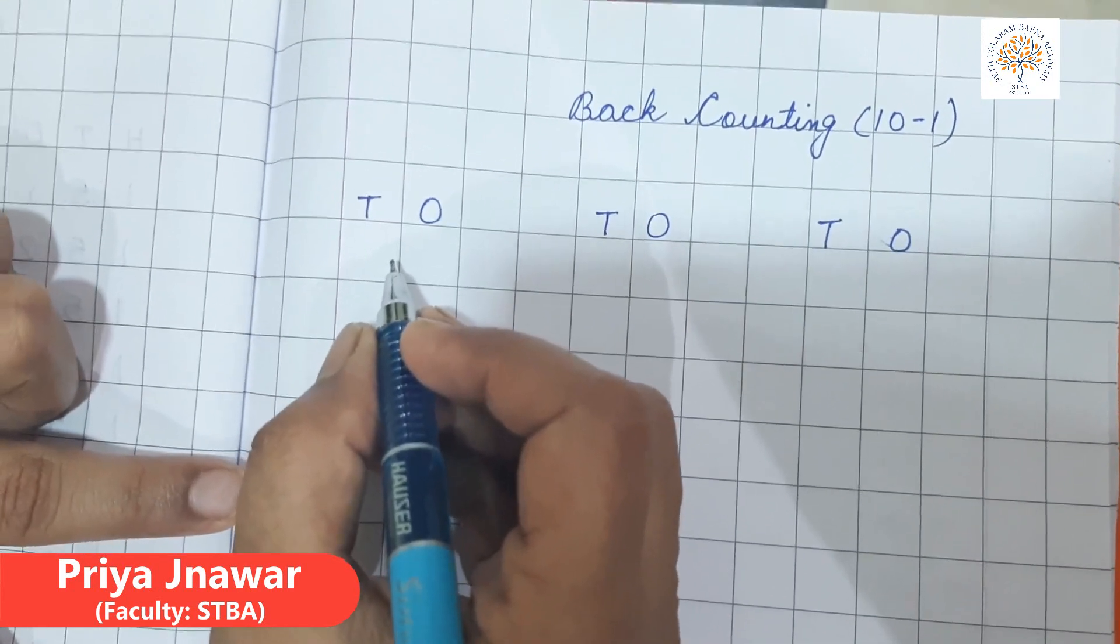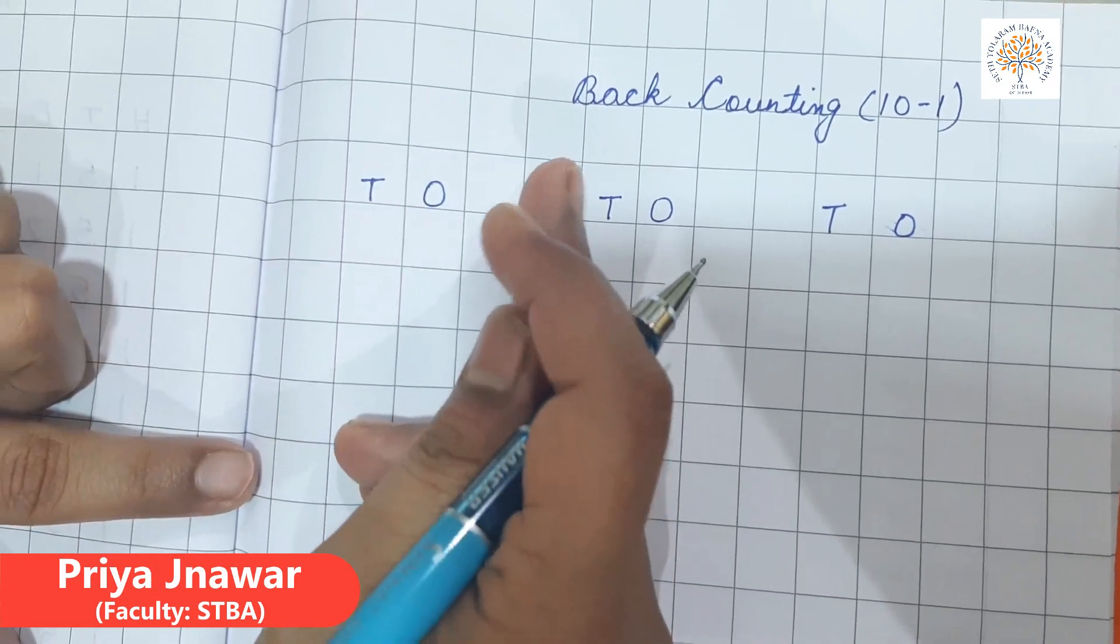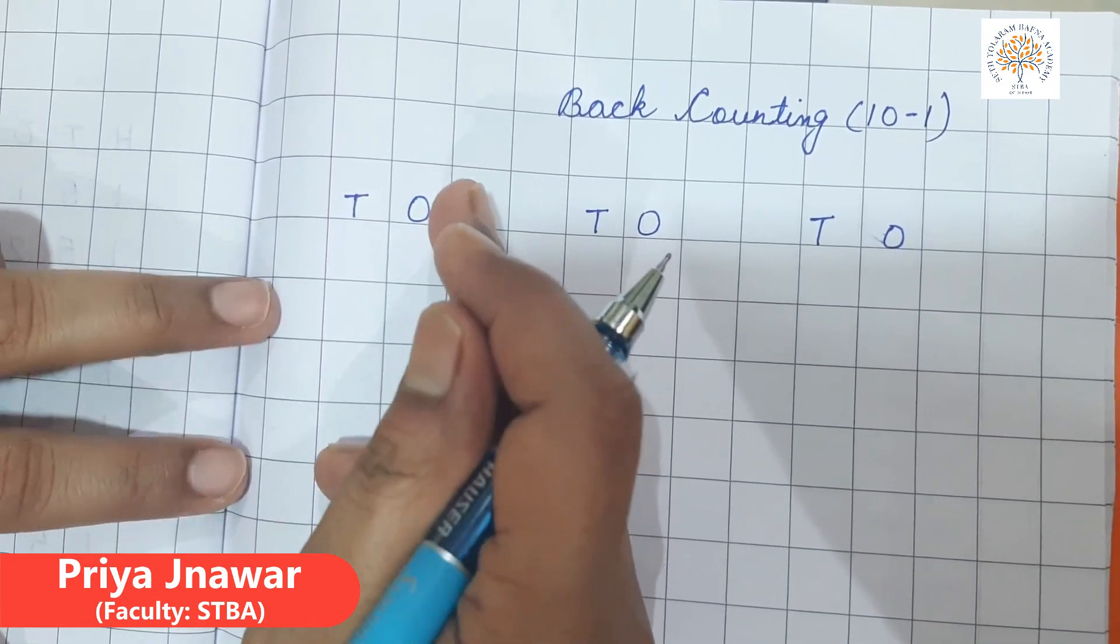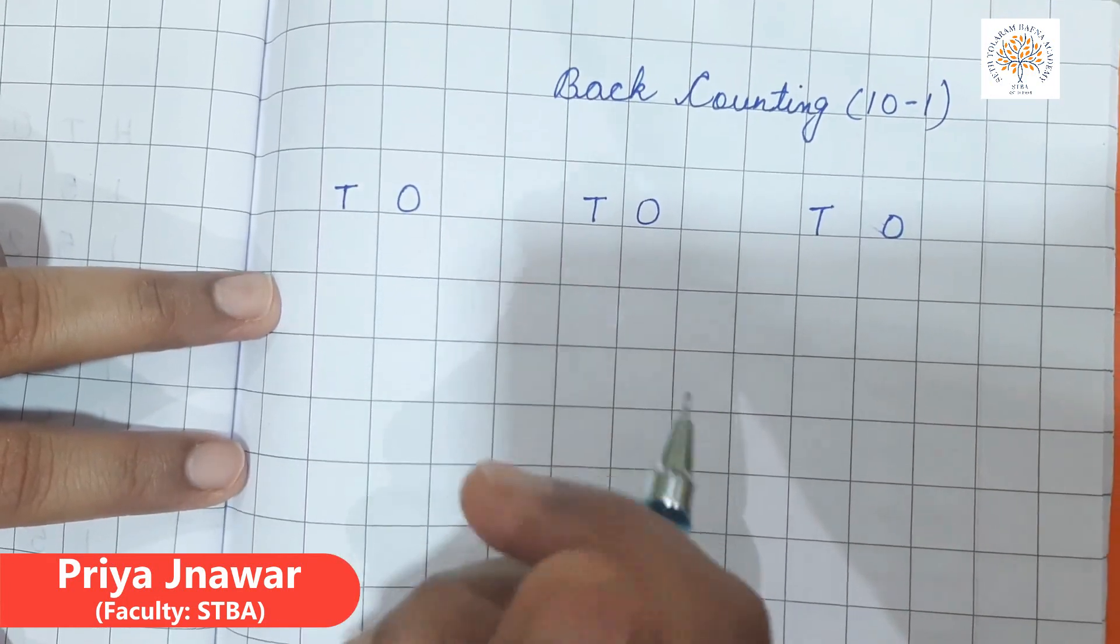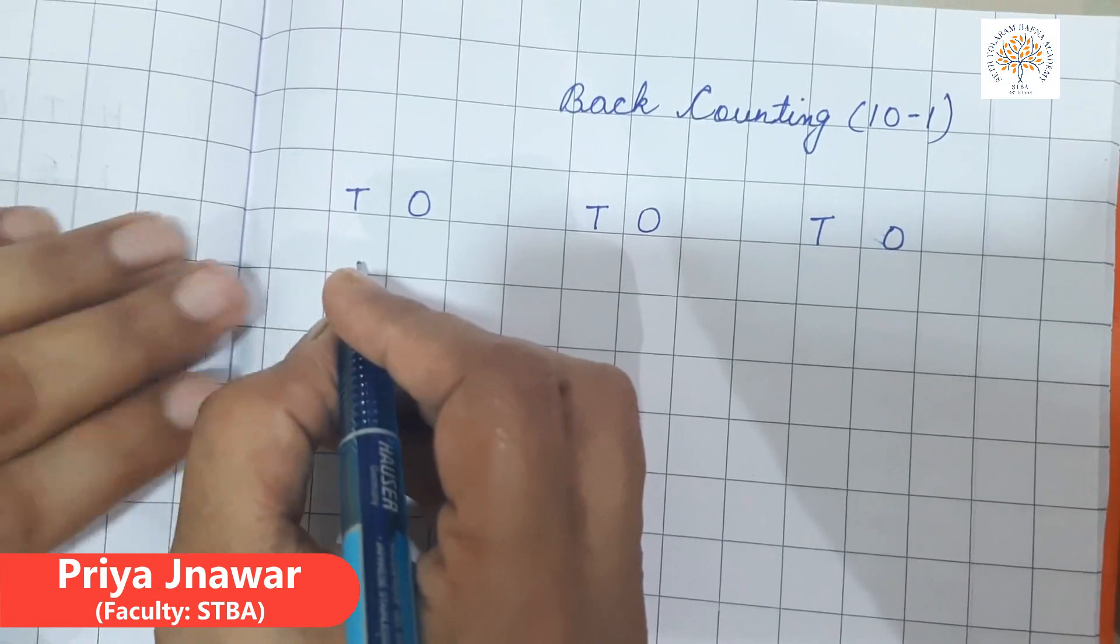So students, this was the counting of forward, this is called forward counting. Now I am teaching you back counting, this means ulti counting. First we are doing 1, 2, 3, 4, 5, 6, now we are going to ulti. So I will tell you.